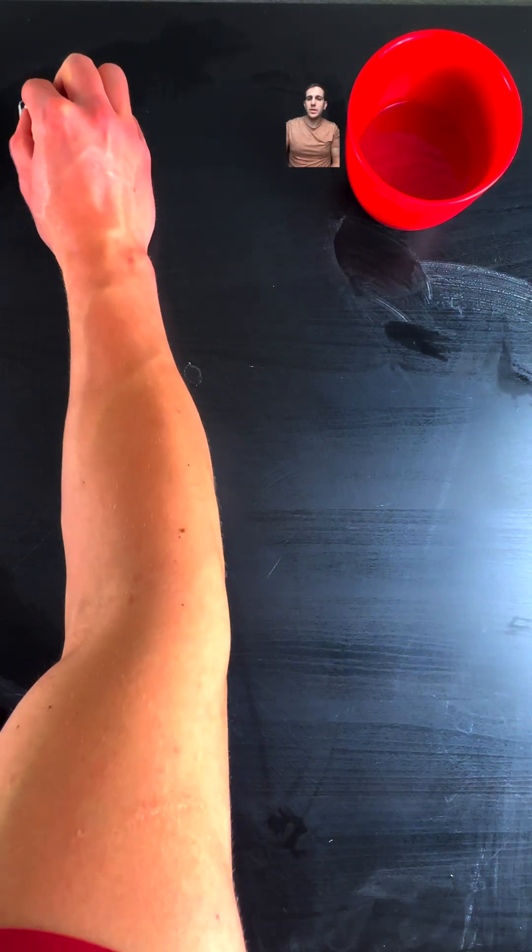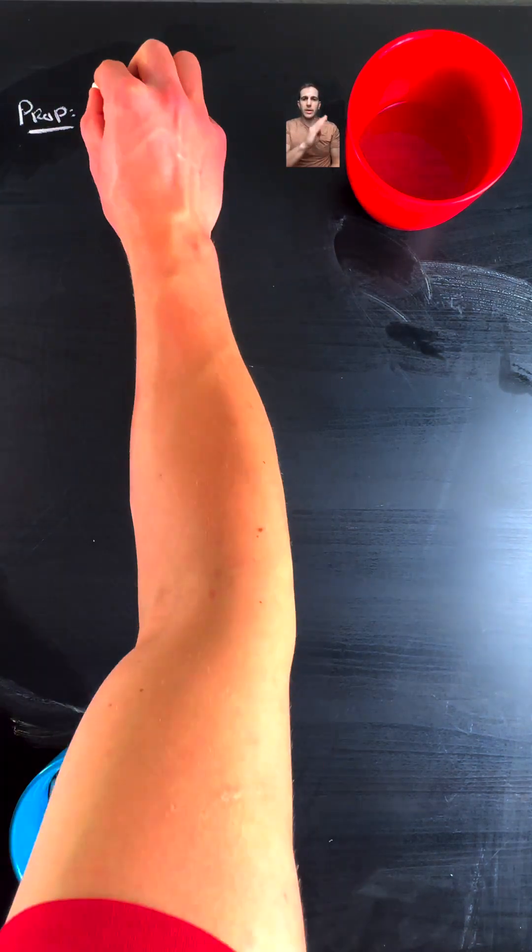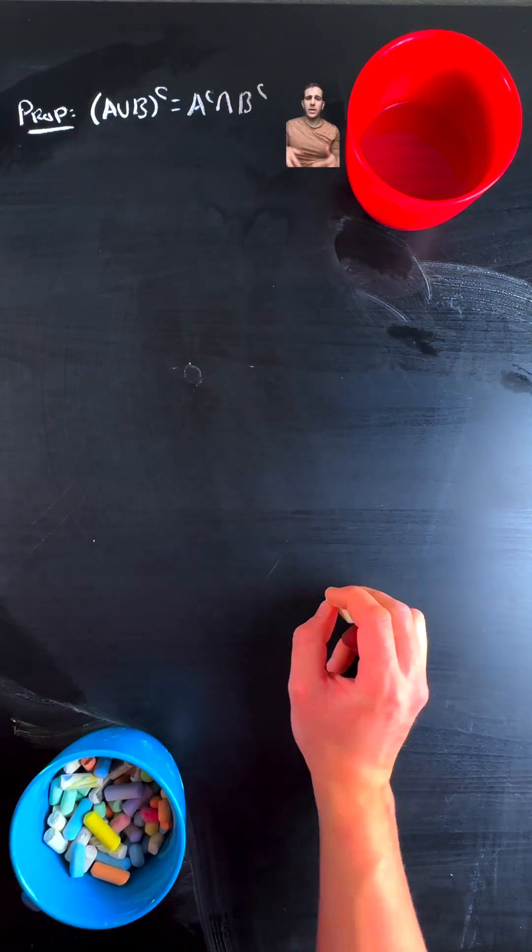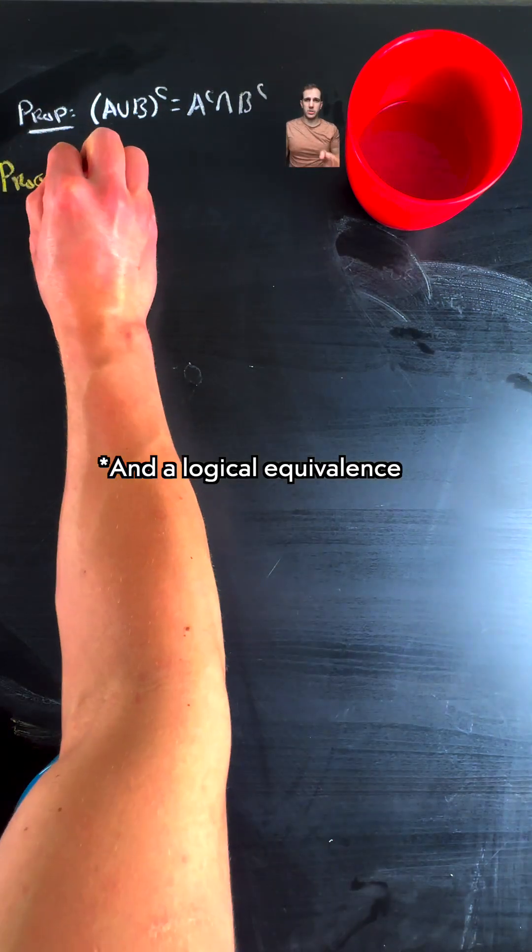What's a quick example of an element chasing proof? Well, this one - the proposition being (A∪B)ᶜ = Aᶜ∩Bᶜ - will be pretty quick because everything is just going to be by definition, so there's only one direction to check.